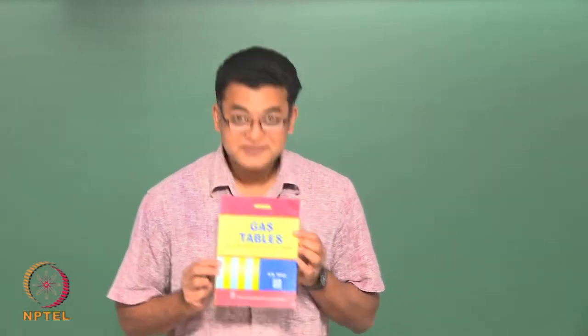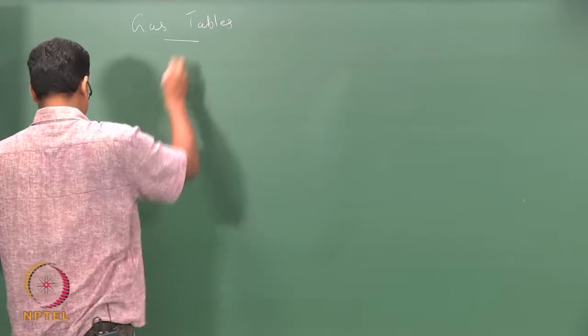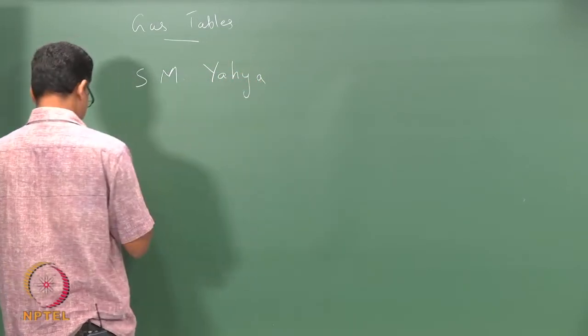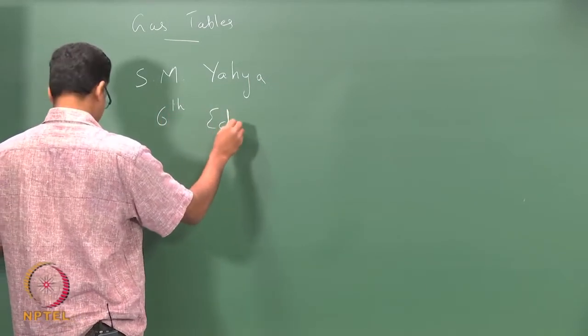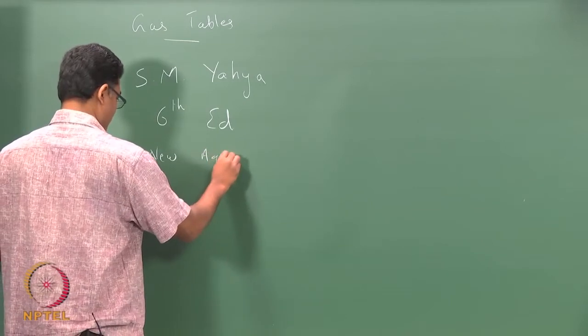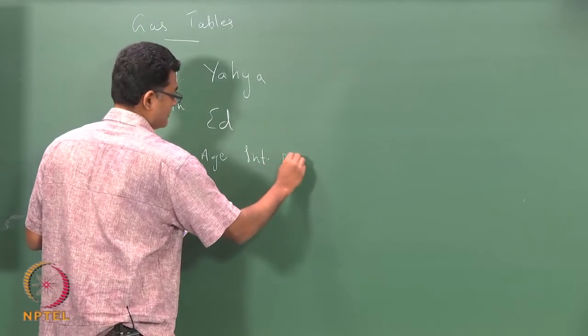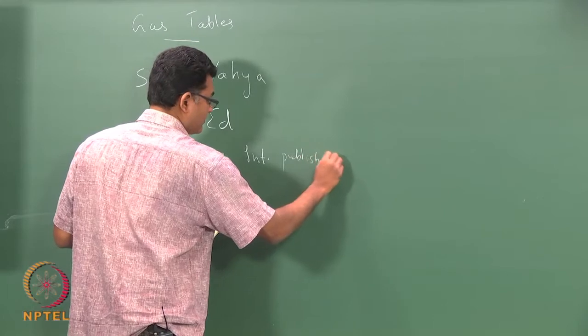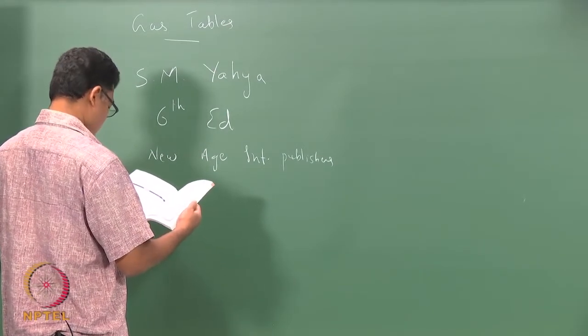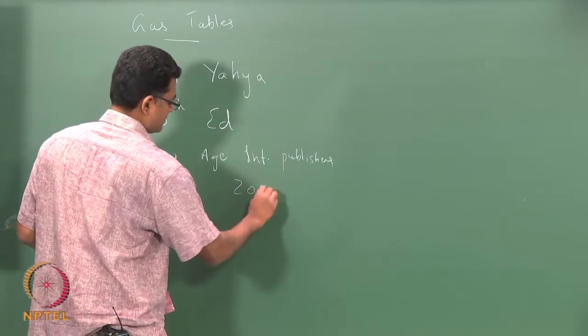In this class we will introduce something called a gas table. I will write down the details so that you can buy this — a book here, sixth edition. You can also look for the latest edition if you want. New Age International Publishers, year 2011.